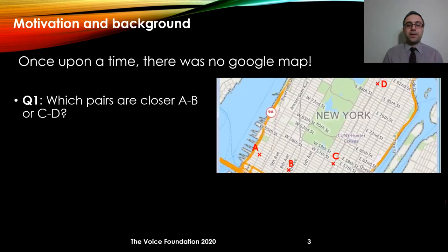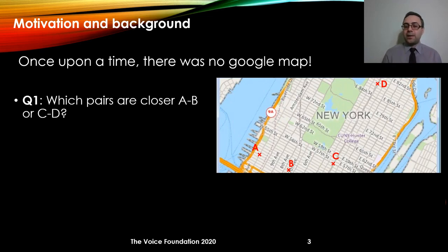So let's start with the motivation. Here is a map of New York, and basically there is a simple task that we want to do: we want to say if the distance between A and B is smaller, or if the distance between C and D is smaller. By looking at this image we could tell that definitely the distance between AB is much smaller than the distance between CD.